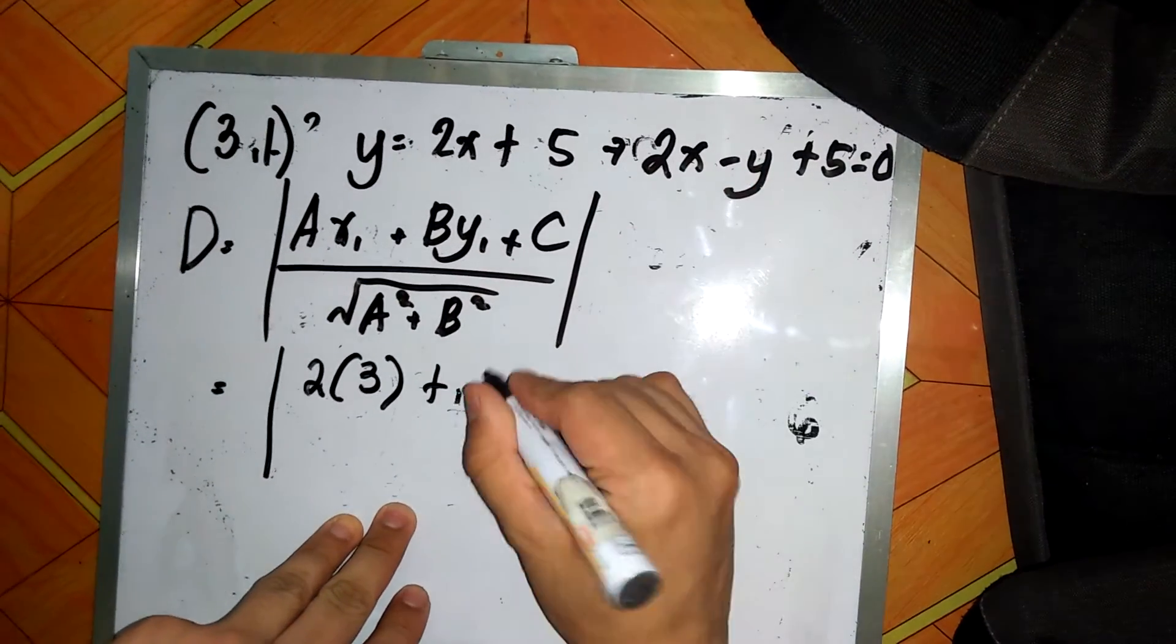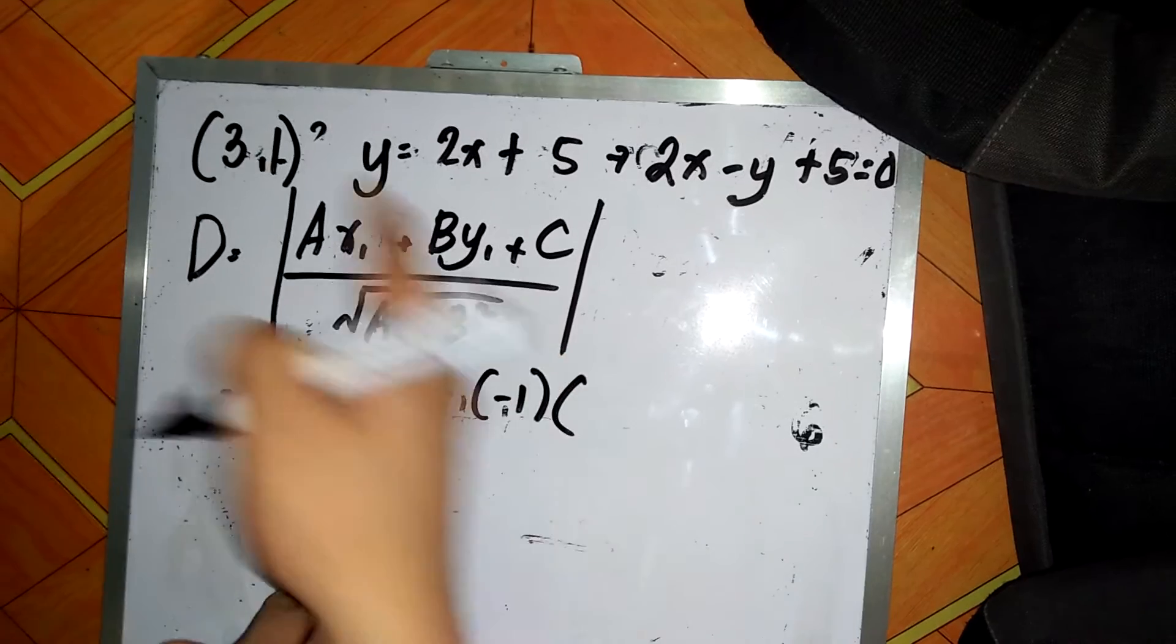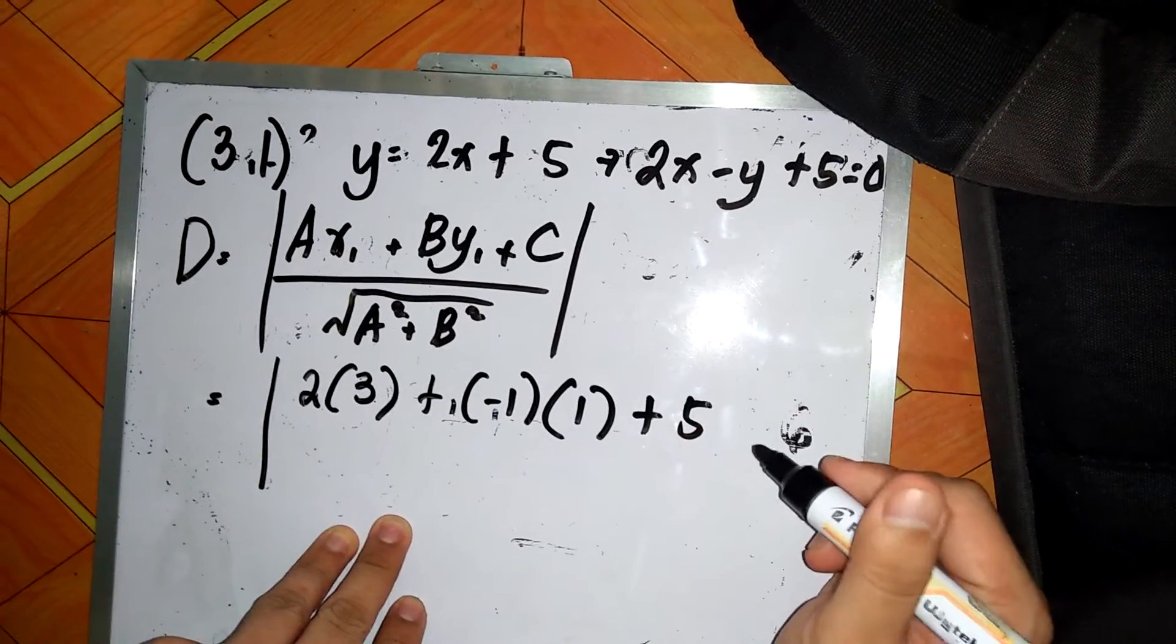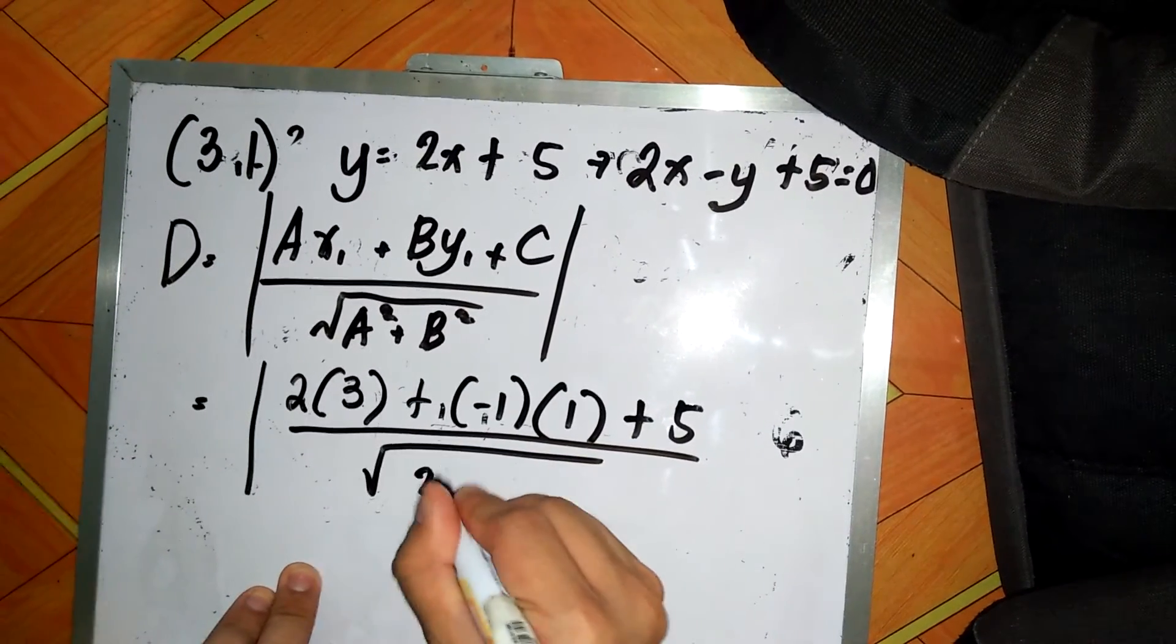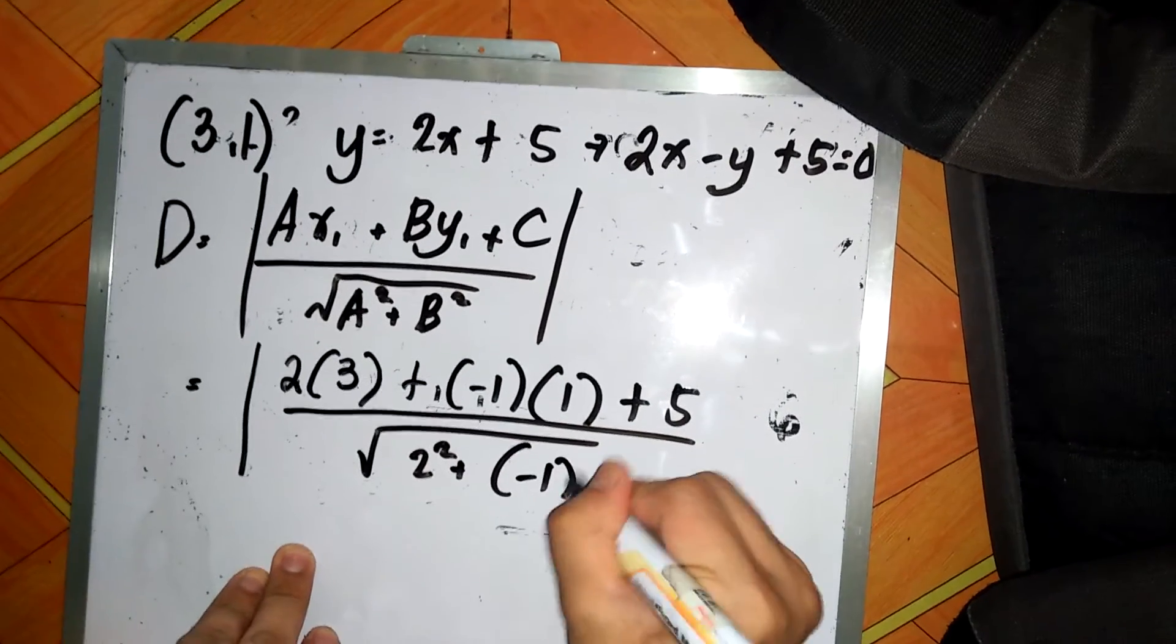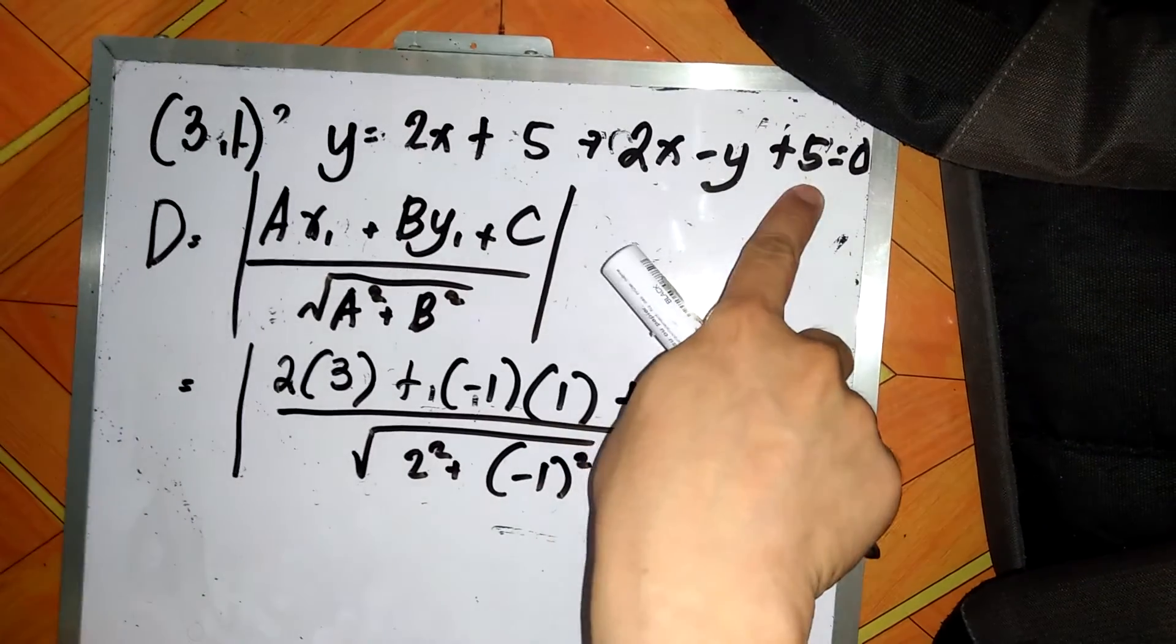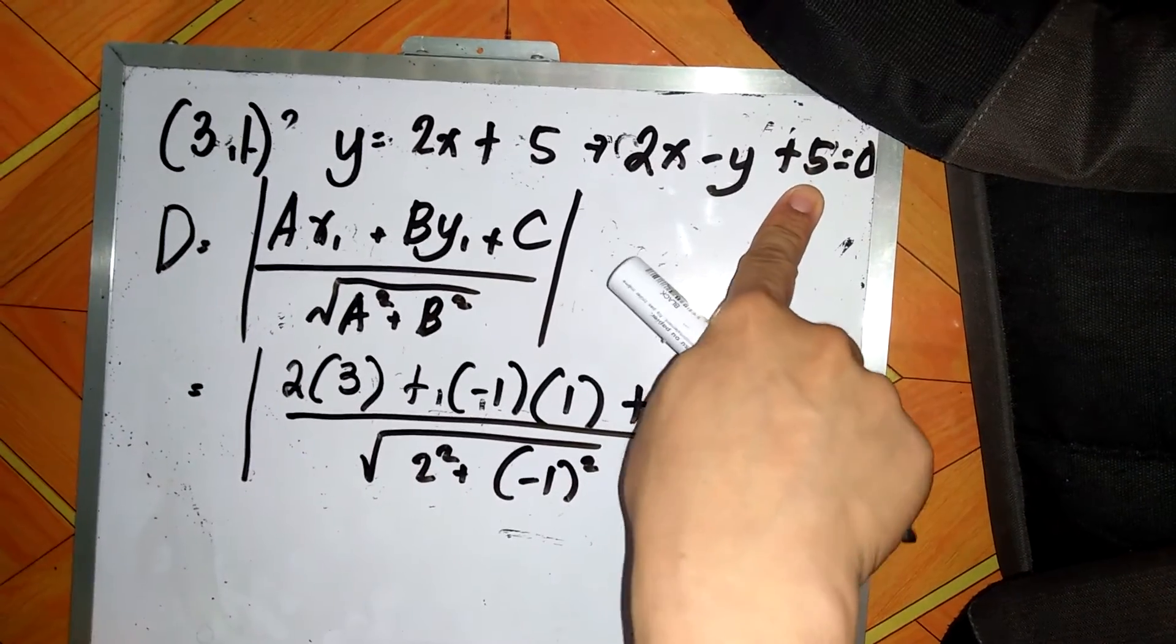Plus b which is negative 1 times y sub 1 which is 1, plus c. C is 5, all over square root of 2 squared plus negative 1 squared. So the c here is equal to 5 since this is already in general form.